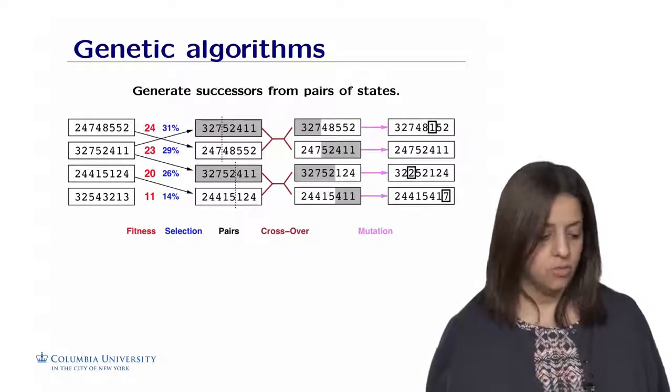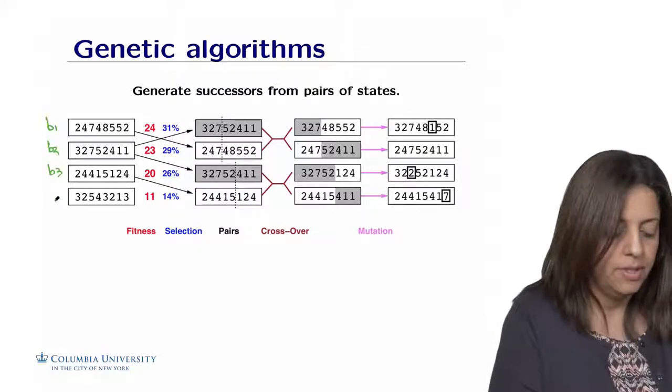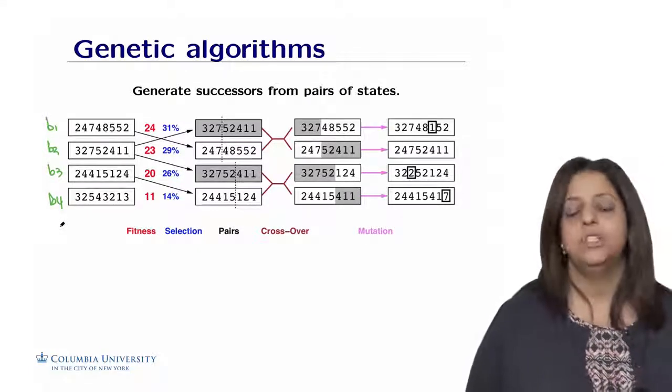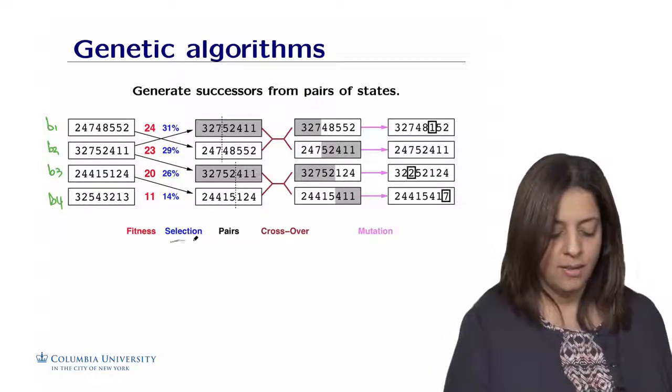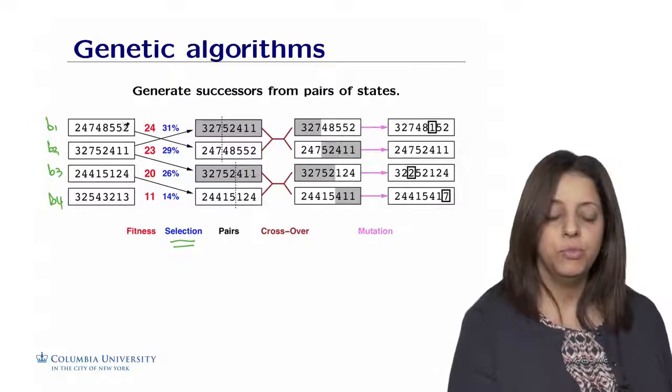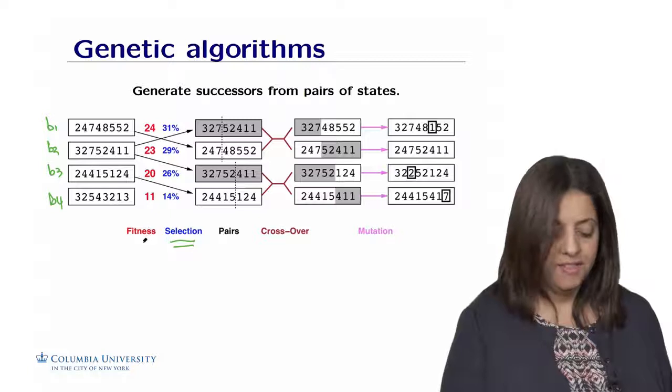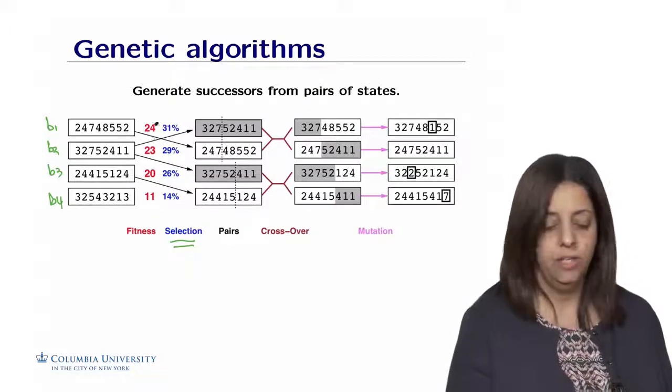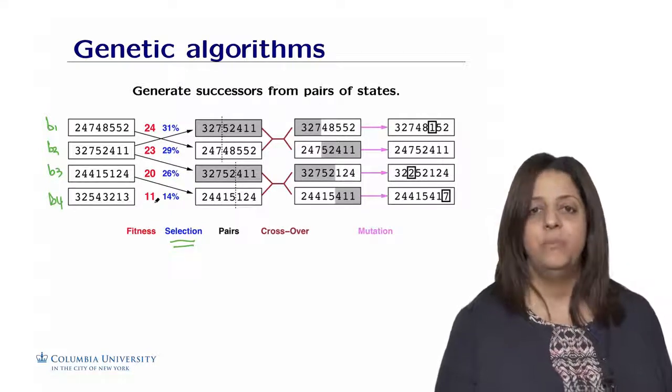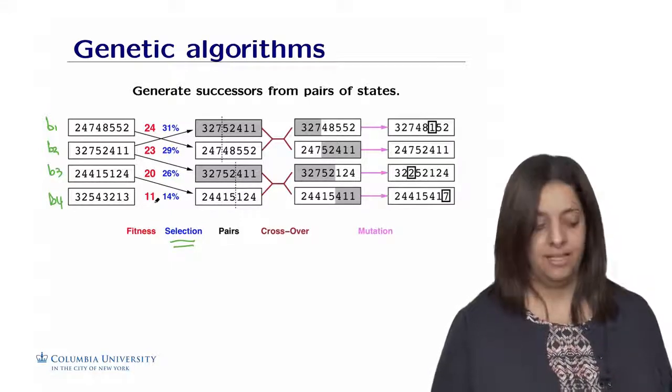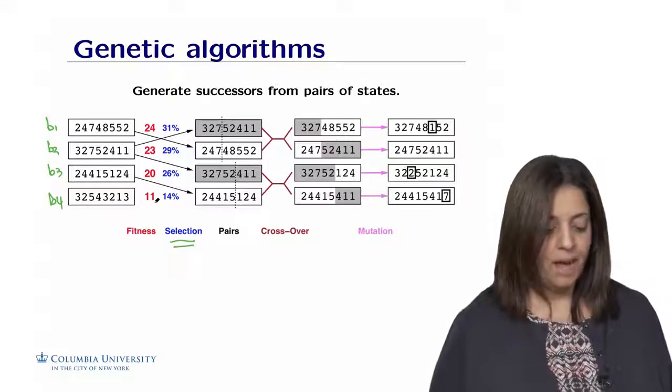So let's use the representation we have seen before to represent each board. So remember, it's a sequence of digits. Suppose we have four boards, B1, B2, B3, and B4. And we want to generate from these four individuals new boards. So we could first do some selection. We will select board one, two, and three. We don't select board four. Note here that the fitness function for this board is given by this red value here: 24, 23, 20, and 11, corresponding to the number of pairs of queens that are not attacking each other. So we are not reaching 28, which is the best solution.